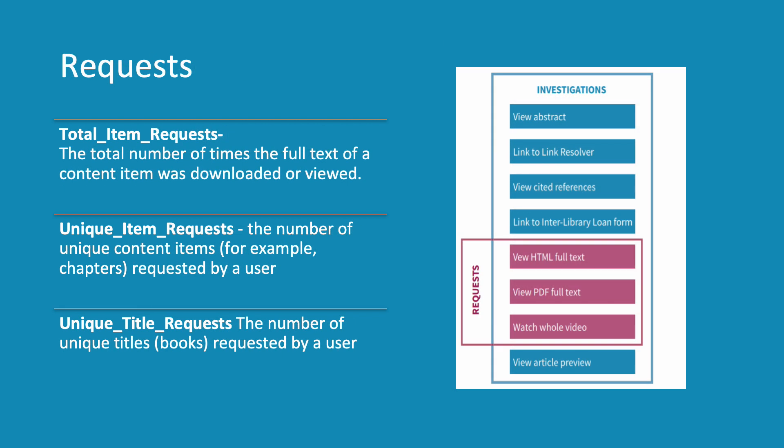Requests follow the same pattern, but are about views or downloads of full-text. That means Total Item Requests is the number of times the full-text of a content item was downloaded or viewed, while Unique Item Requests are the number of unique content items – for example, chapters – requested by a user, and Unique Title Requests is the number of unique titles – again, books in this instance – requested by a user.